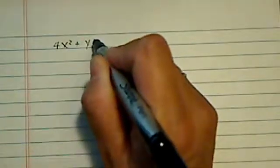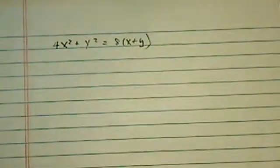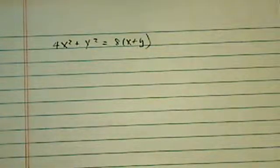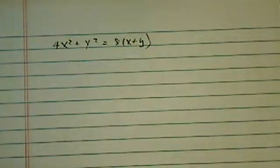Next case, we have a little bit of a different one. We have 4x² plus y² equal to 8x plus y. All right, let's see what we have to do for this one.